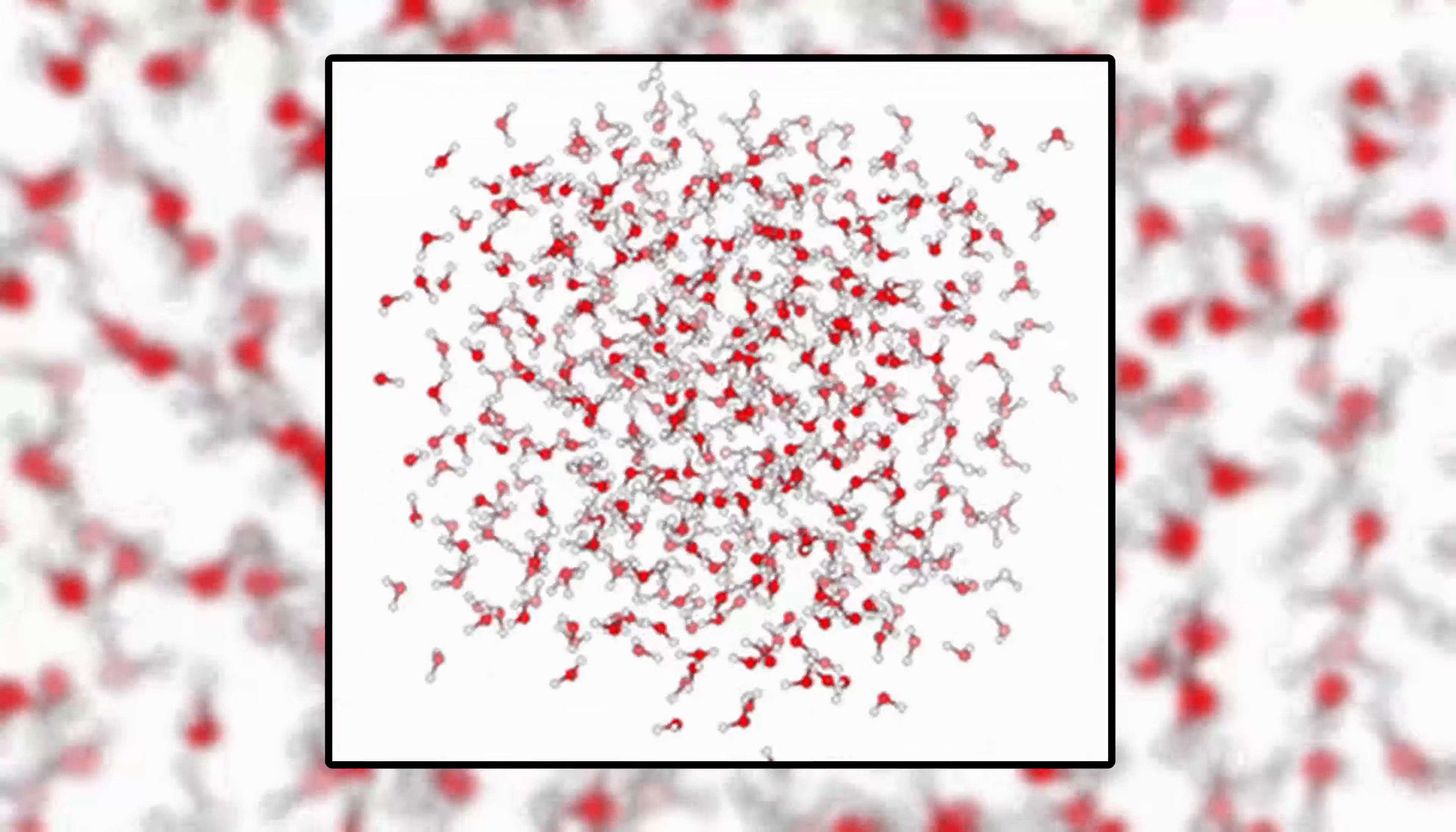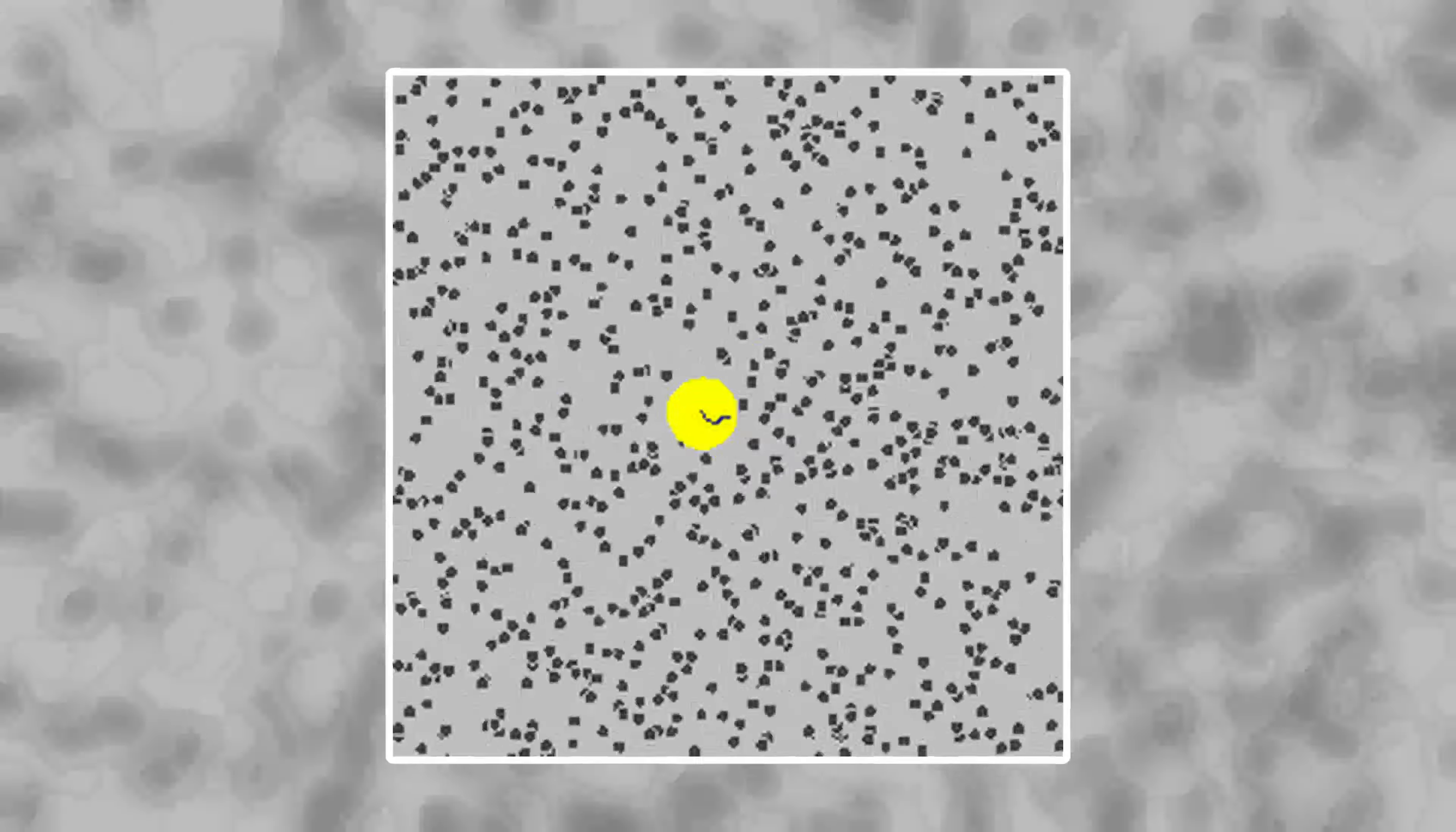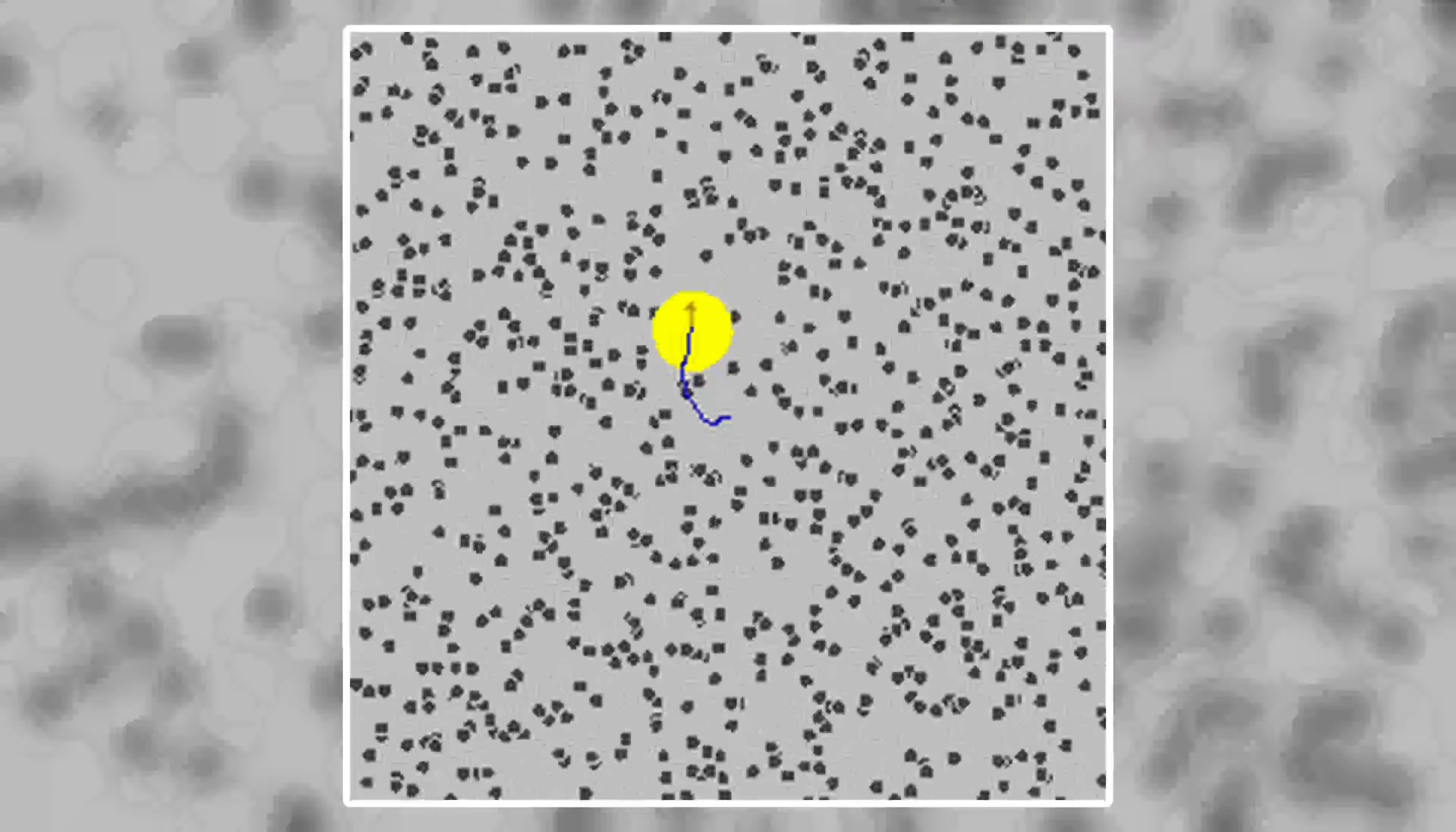Since each water molecule has a different speed and therefore a different amount of momentum and can come from any direction, each collision would have a different effect on the suspended particle, causing it to move in a seemingly random motion throughout the solvent over time.